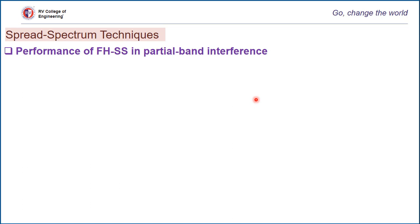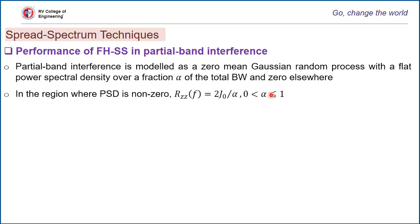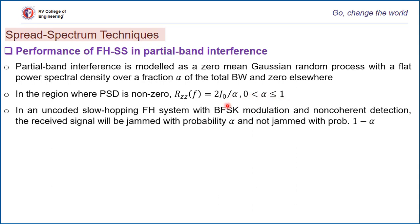Finally, for partial band interference — since the AWGN channel is a wideband interference model — we can model the channel as partial band or narrowband interference. Such a channel is modeled as a zero-mean Gaussian random process with a flat power spectral density over a fraction α of the total bandwidth. The PSD is zero outside that band, and where non-zero it is defined as 2J0/α, with α varying from 0 to 1.